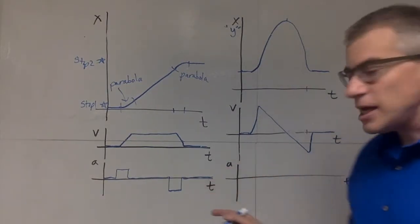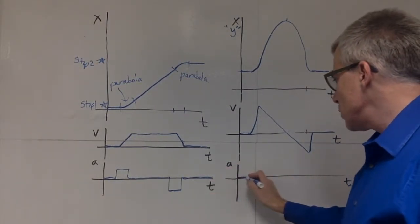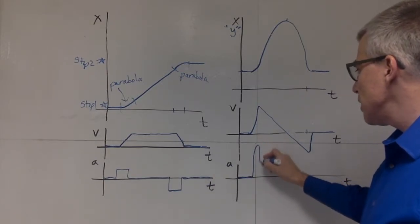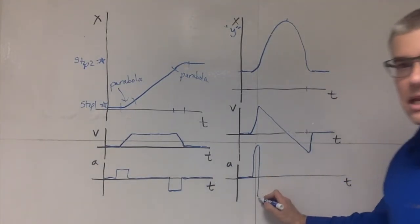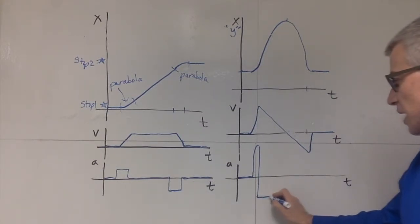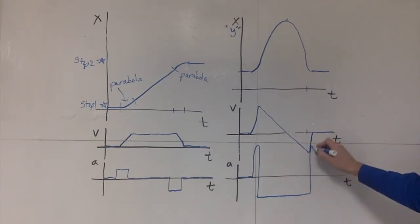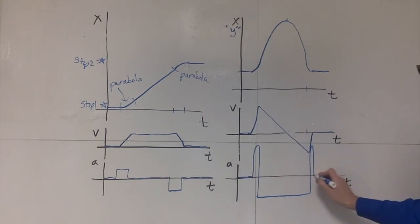So the acceleration, as I said, was zero. Then a big positive blip. Then it was a steady negative 9.8 for the entire rise and fall. And then with the catch there was another big positive blip and then zero.